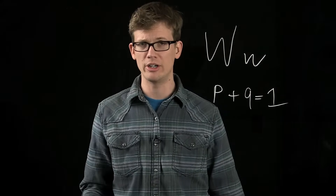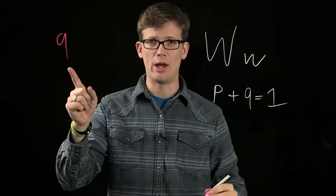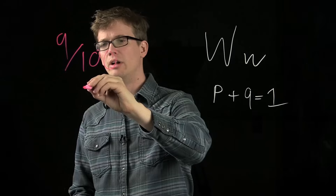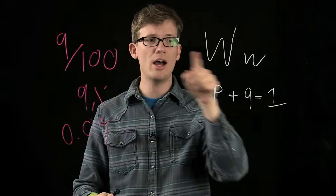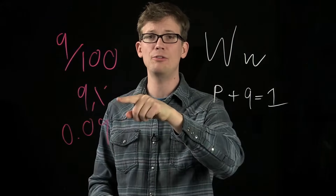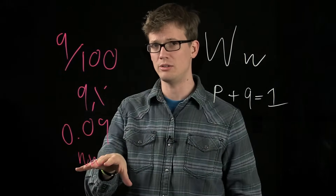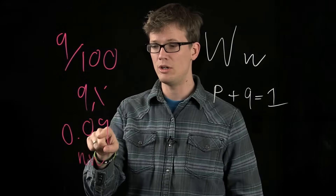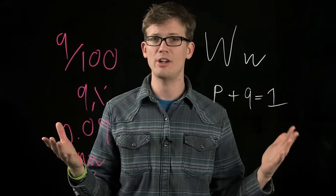Since there are only two alleles for this gene in the entire population, P plus Q equals 1. So if the frequency of P is 75%, Q must be 25%. Now imagine we go to this hypothetical Hardy-Weinberg Island with 100 people, and we poke every single one of them in the ear, and 9 of them have dry earwax. So that's 9 over 100, or 9%, or 0.09. But this is not Q — it's not the frequency of the little w. It's the frequency of ww, homozygous ww. So this is the expressed phenotype, not the genotype. We know the frequency of ww, but there's going to be a bunch of other w alleles hanging around in heterozygous pairs.